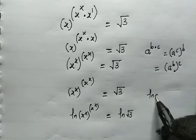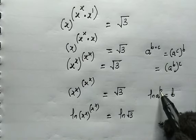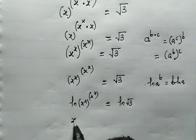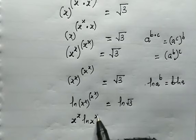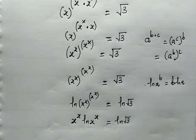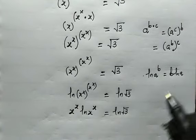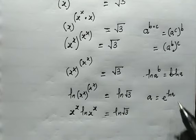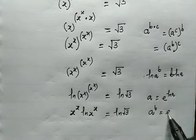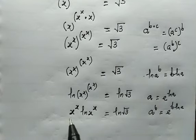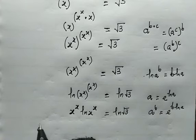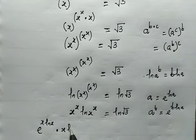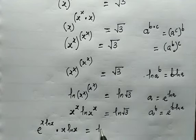With the property of natural log — the natural log of a to the power of b equals b times the natural log of a — this becomes x to the power of x multiplied by the natural log of x to the power of x, equal to the natural log of root 3. Now x to the power of x can be put in exponential form. We note that a equals e to the power of natural log of a, so x to the power of x equals e to the power of x times the natural log of x. Applying that here, we get e to the power of x times ln(x), multiplied by x times ln(x), equal to the natural log of root 3.